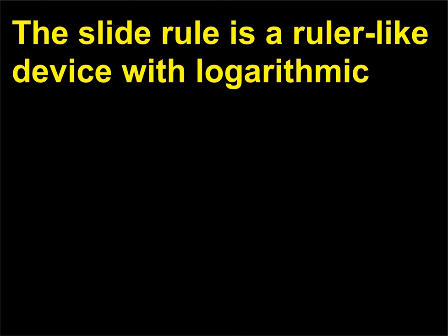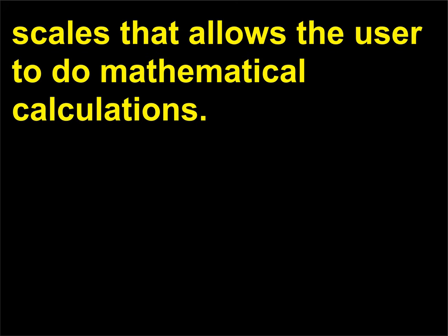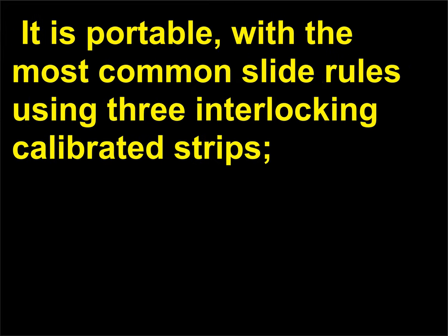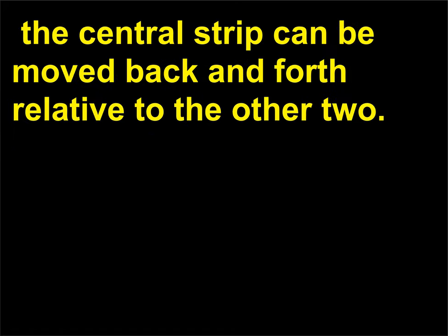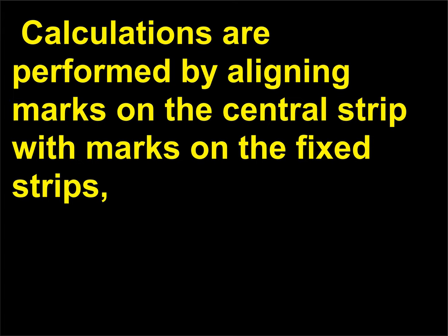The slide rule is a ruler-like device with logarithmic scales that allows the user to do mathematical calculations. It is portable, with the most common slide rules using three interlocking calibrated strips. The central strip can be moved back and forth relative to the other two. Calculations are performed by aligning marks on the central strip with marks on the fixed strips.